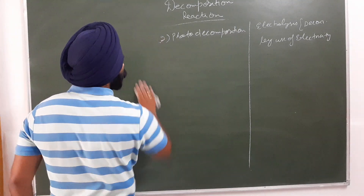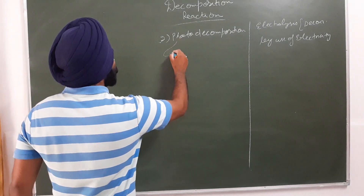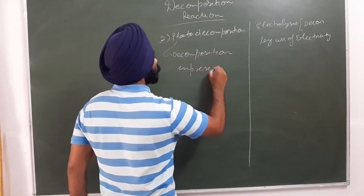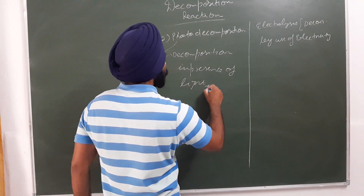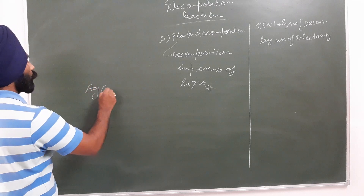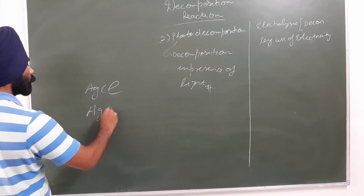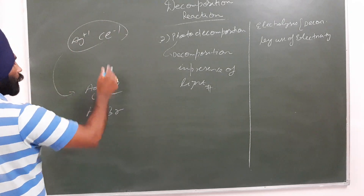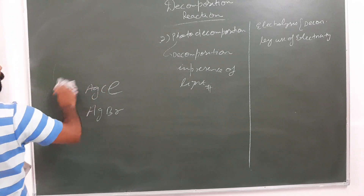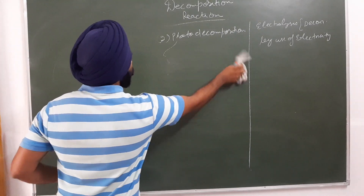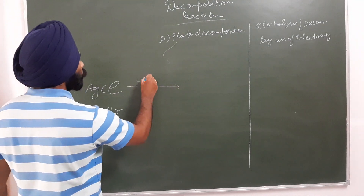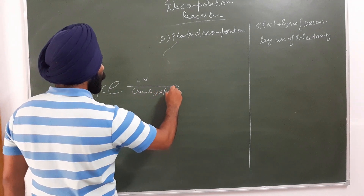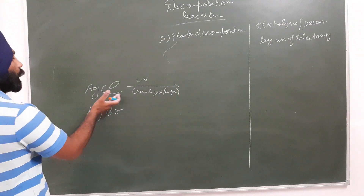Number two is photo decomposition — decomposition in the presence of light. The two compounds are silver chloride (AgCl, Ag+1 Cl-1) and silver bromide (AgBr). In the reaction, we write sunlight or UV light above the arrow. These compounds decompose when exposed to sunlight or UV light.